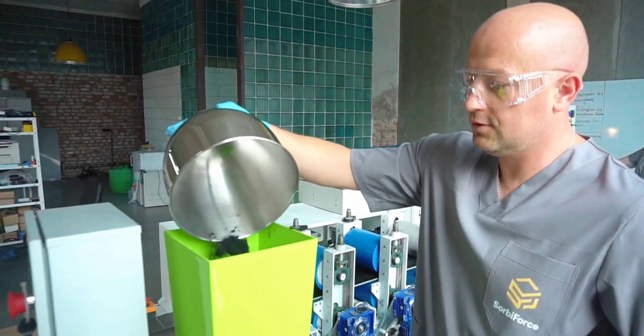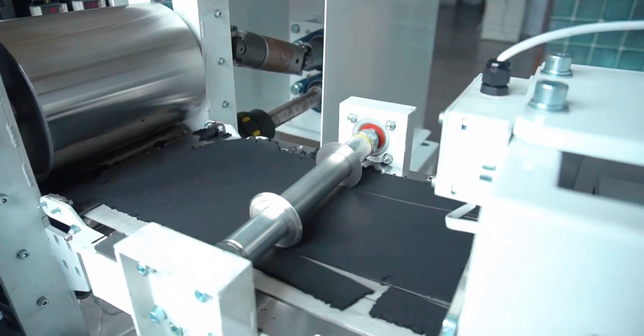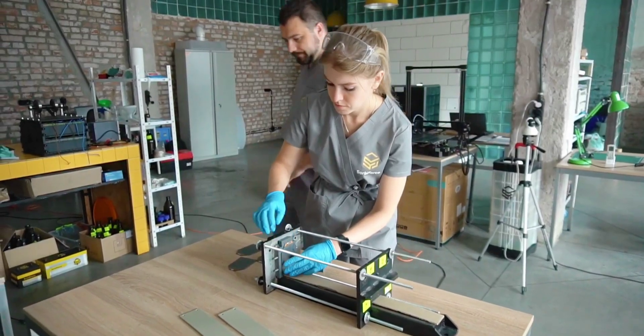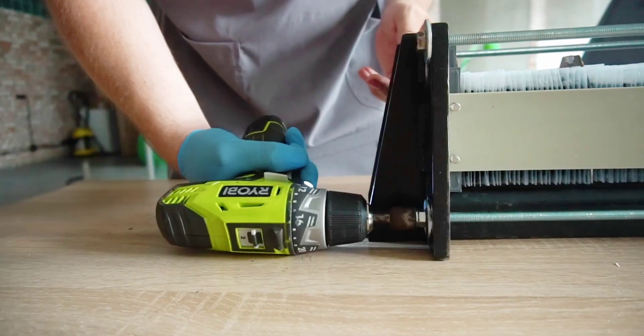Ukrainian startup SorbyForce has made a major breakthrough by transforming agricultural waste into a metal-free organic battery prototype, in an attempt to combat the environmental impact of conventional batteries.